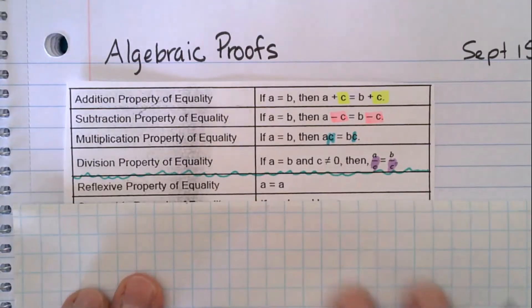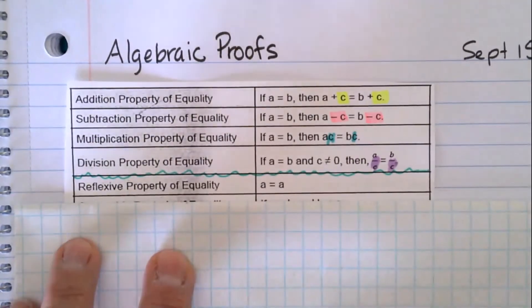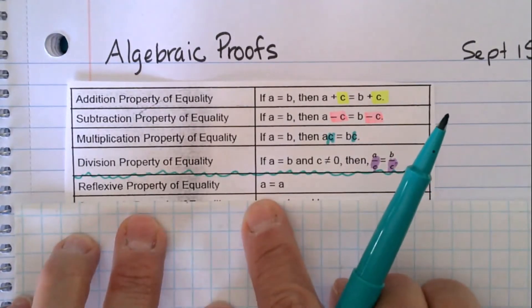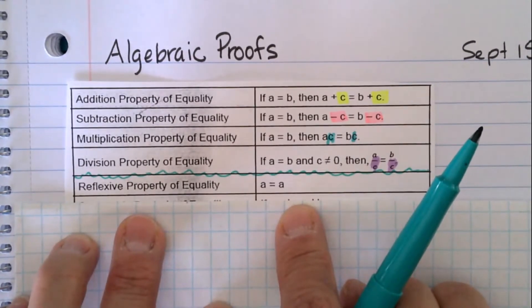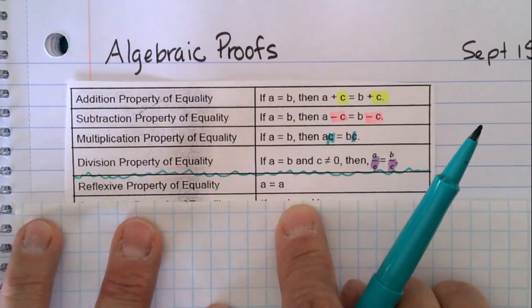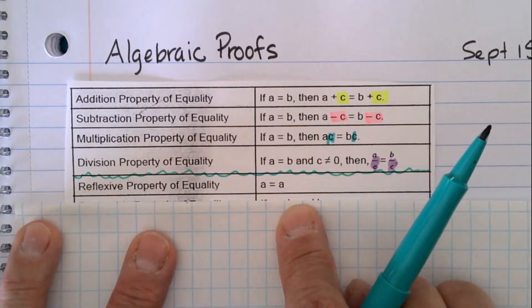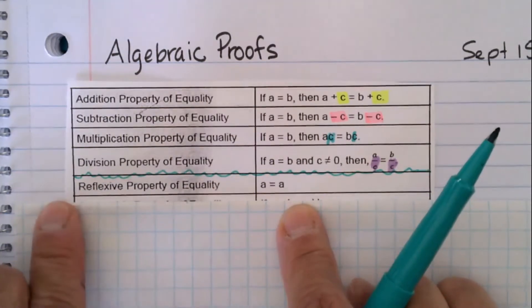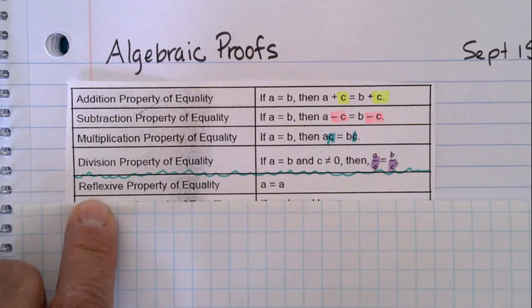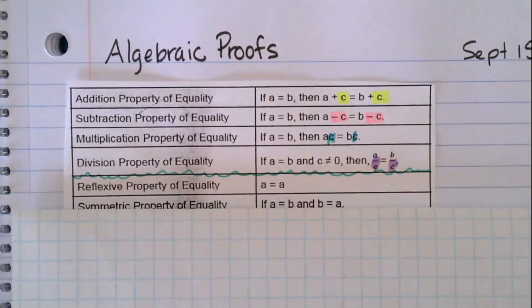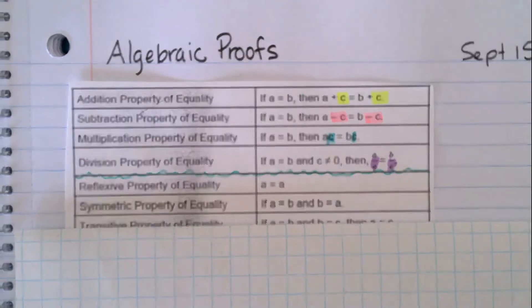There's other properties too. Some we use in algebra and some you're going to use mostly in geometry. The reflexive property of equality says that a equals a. This one is weird. It's like saying something equals itself. It's kind of so obvious that you can't even imagine why someone would make it a property. The way to remember it for geometry is the reflexive sounds like reflect, which is like a mirror. If you look in the mirror, you get a reflection of yourself. That's kind of what this is.